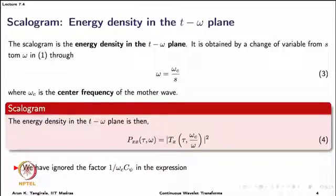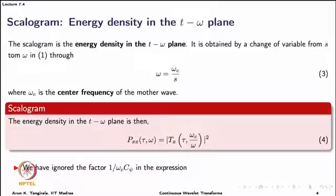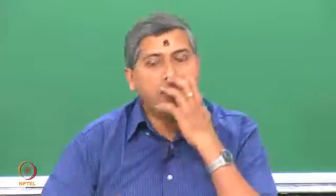In fact, only if you put back 1/(omega_c · C_psi) into equation 4 can you make the result comparable to those from spectrogram or Wigner-Ville distribution, which give correct energy density expressions in the time-frequency plane. Normally, the raw scalogram as defined in equation 4 does not give the correct comparison between energies at different scales — and why does this happen?